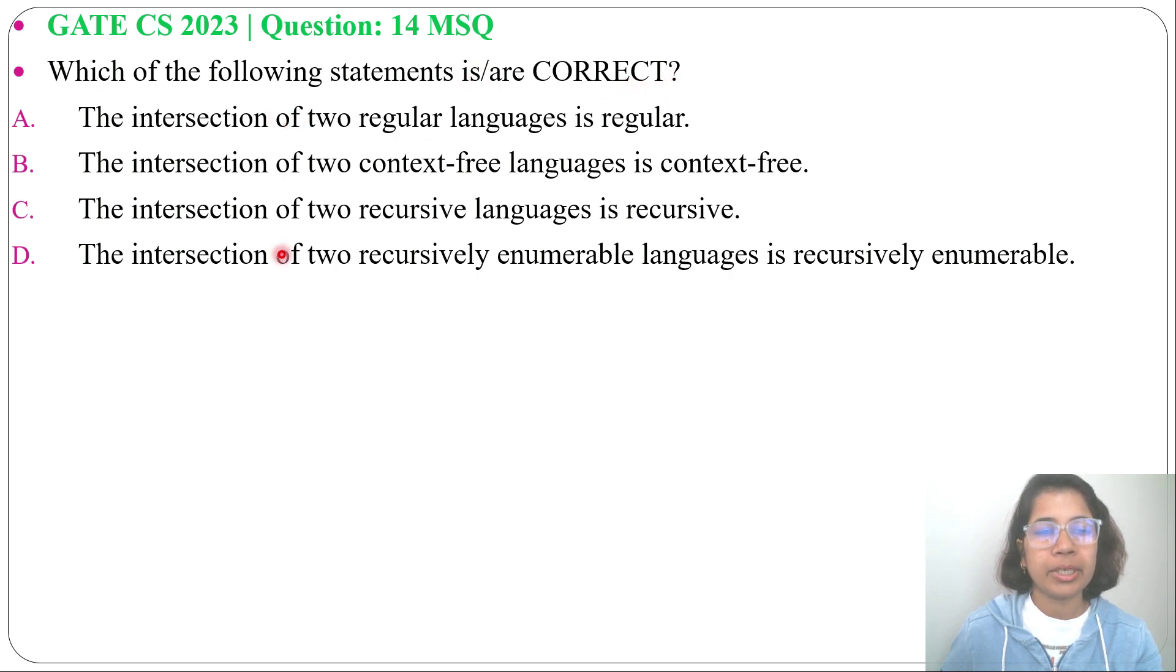In four options, four statements are given. Option A: The intersection of two regular languages is regular. It's true. Regular languages are closed under intersection. Two regular languages intersection will be also regular. So option A is correct.